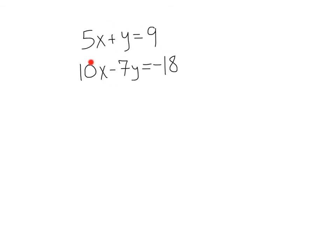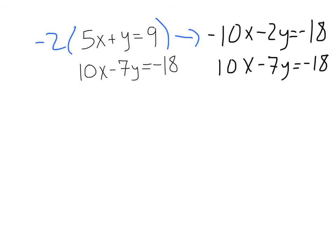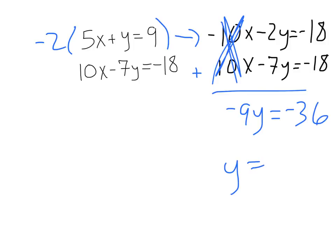Notice, using the same equation, we could have also multiplied this first one by negative 2. That would have given us negative 10x minus 2y equals negative 18, which this time would have canceled out the x's, which is perfectly fine, giving us negative 9y equals negative 36, and a y value of 4, and then you could plug that in and solve for x. Either way, it doesn't matter if you choose to eliminate the x or the y, same process.